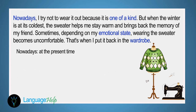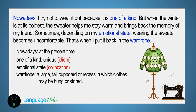The next cue is when you wear it. Our answer is: Nowadays, I try not to wear it out because it's one of a kind. But when winter is at its coldest, the sweater helps me stay warm and brings back the memory of my friend. Sometimes, depending on my emotional state, wearing the sweater becomes uncomfortable — that's when I put it back in the wardrobe. Nowadays means the present time. When something is one of a kind, it's unique. Emotional state is a collocation. A wardrobe is a large tall cupboard or recess in which clothes may be hung or stored.